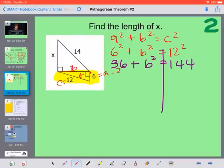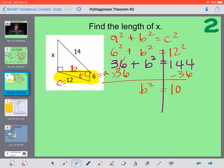And I'm going to subtract 36. So we get b squared equal to 144 minus 36 gives us 108. Now our last step, we're going to take the square root. So we have b equal to whatever the square root of 108 is.